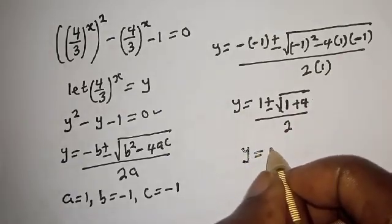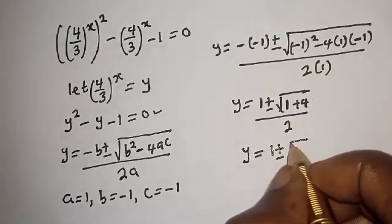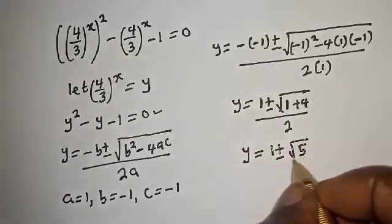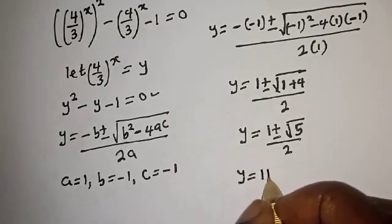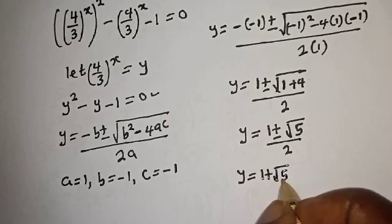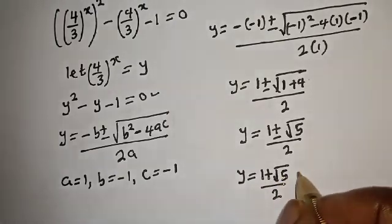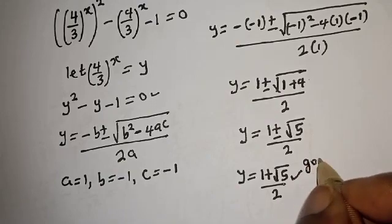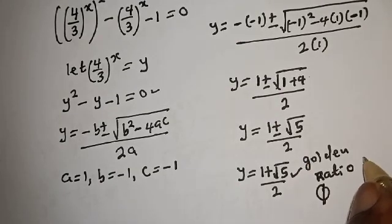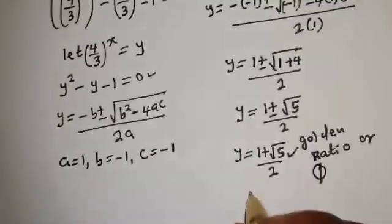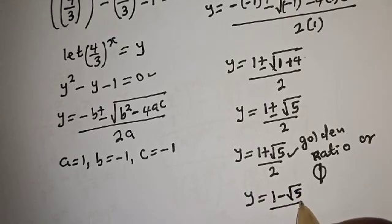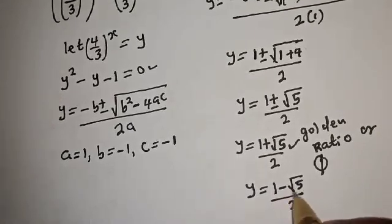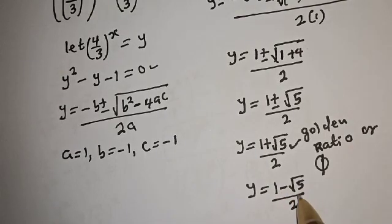Then Y is equal to 1 plus or minus square root of 5 over 2. From here, Y is equal to 1 plus square root of 5 over 2 — this is called the golden ratio — or Y is equal to 1 minus square root of 5 over 2. But this second solution is less than 0 and is rejected.